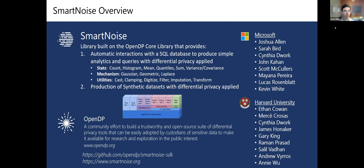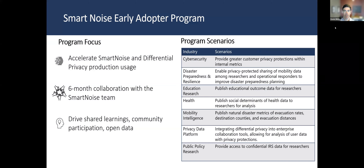About four or five months ago we launched the SmartNoise Early Adopter Program to support teams interested in differential privacy who may need a little help. The focus was to accelerate usage of the product and migrate solutions to production. It was a six-month collaboration and we're at about month four. One of the larger goals was to drive shared learnings and bring understanding back to the community, and to open up data for researchers to help with society.